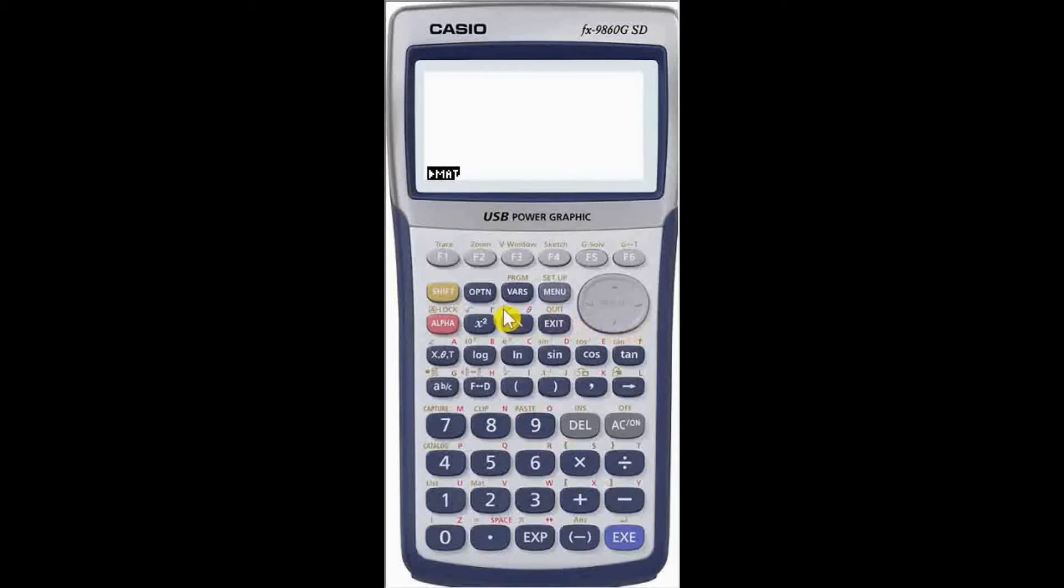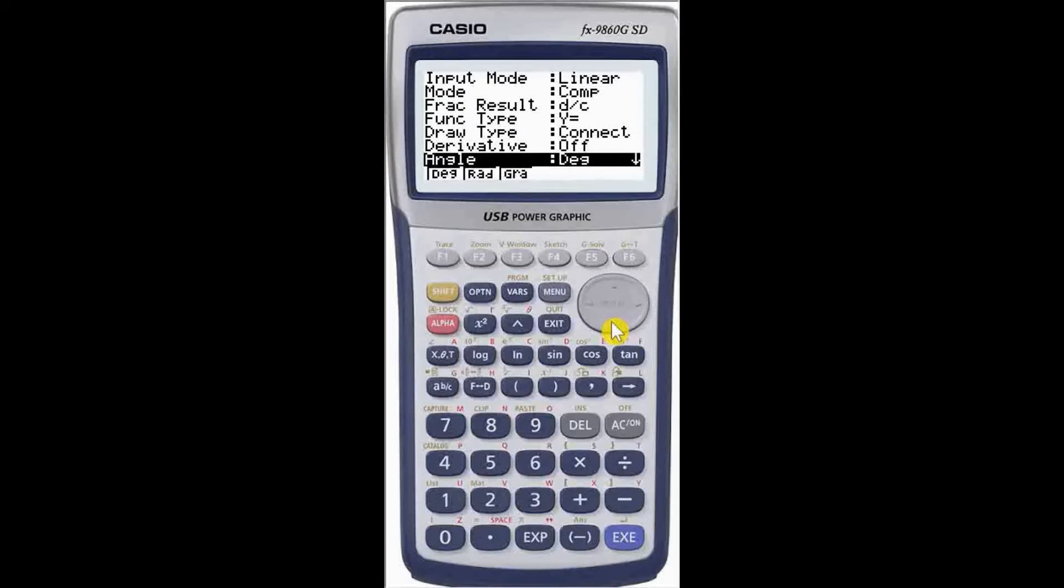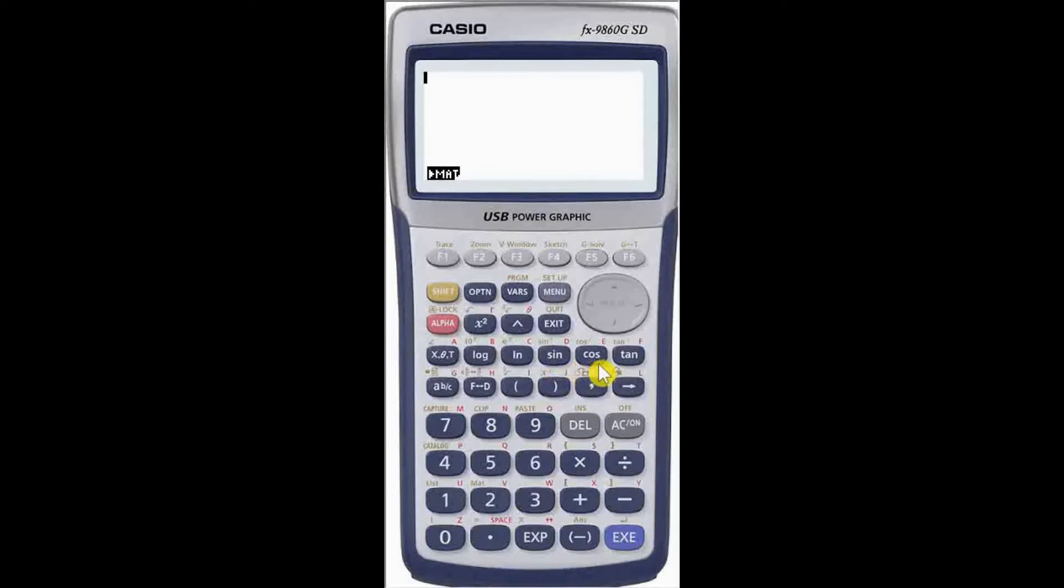On a Casio calculator, we set radian mode with yellow shift, setup, scroll down to angle, and press F2 for radians. The sine, cosine, and tangent buttons all have yellow labels denoting the corresponding inverse function. So, yellow shift, tan, 2, execute. The angle whose tangent is 2 is 1.107 radians.